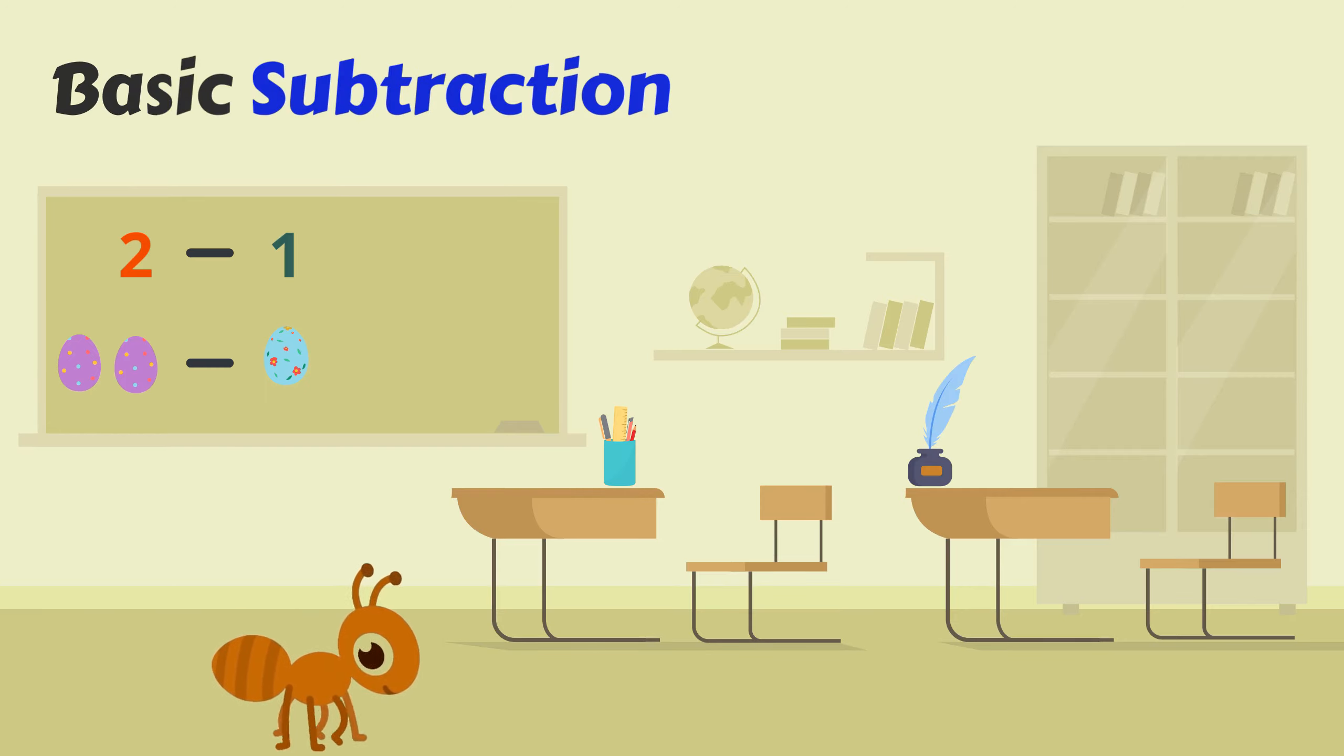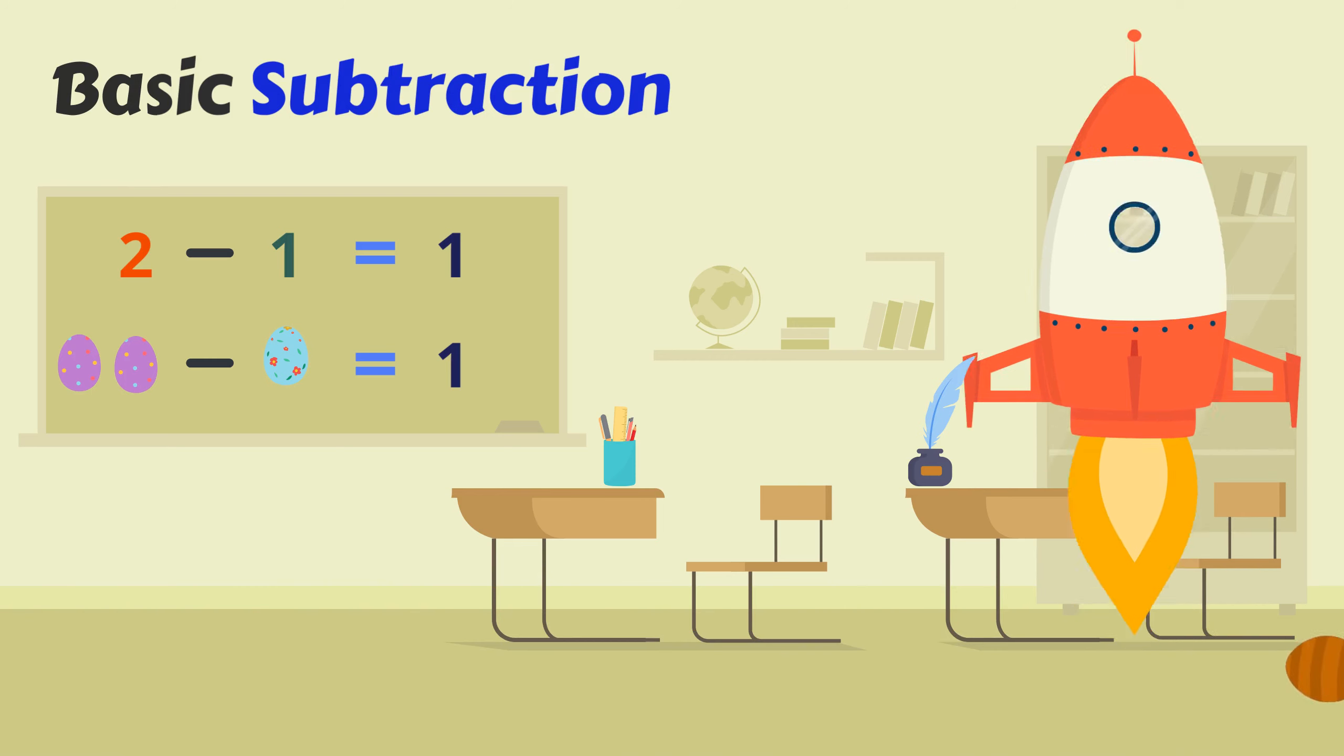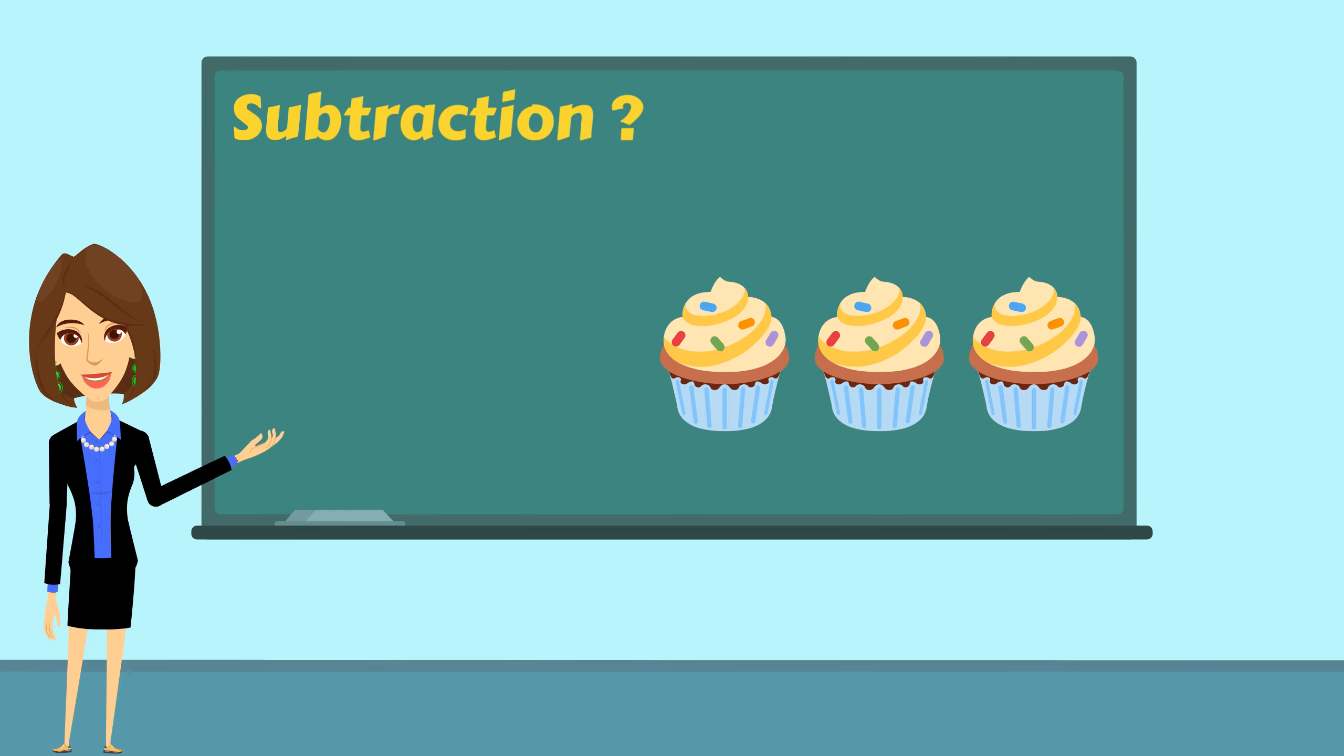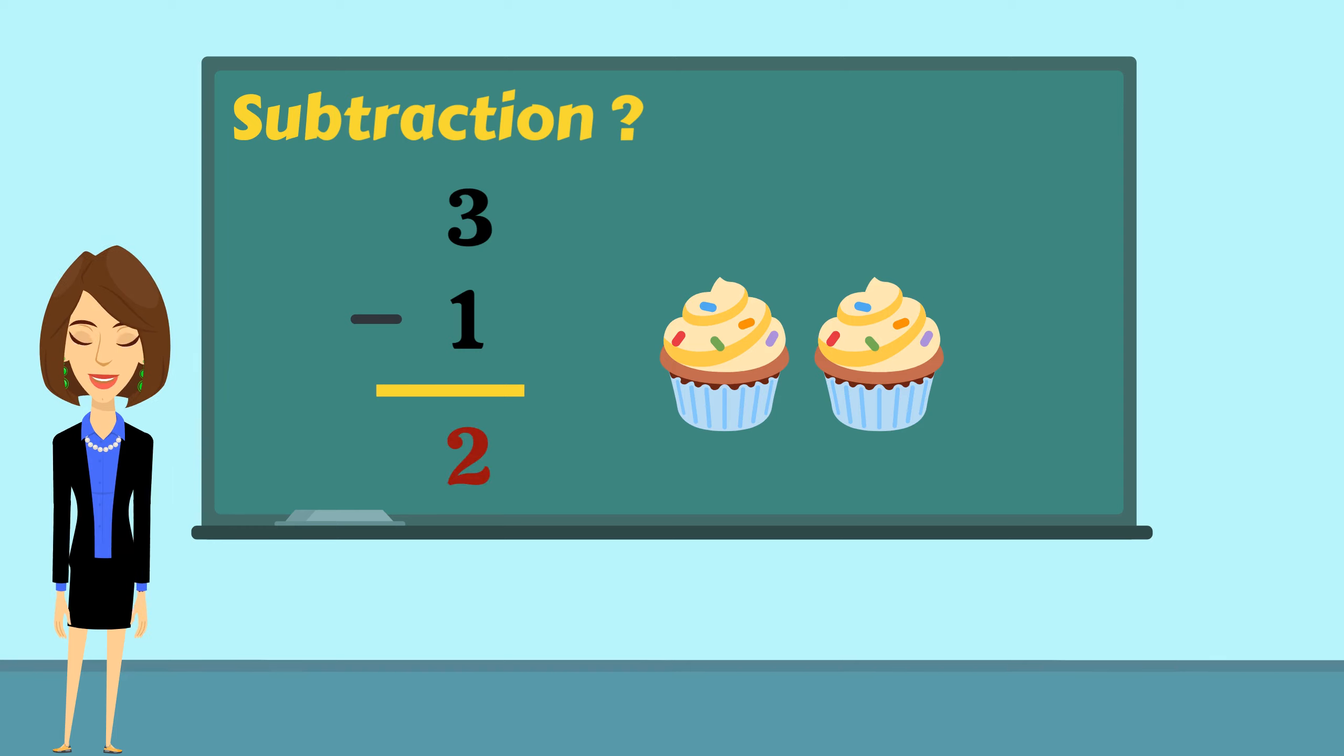Hello everyone, welcome to Kiddo Kitta. Today we are going to learn about basic subtraction. We have three cupcakes. If you eat one, how many cupcakes would remain? It is two cupcakes. We have done a subtraction here. Subtraction means taking numbers away from another. The symbol used in subtraction is called minus.